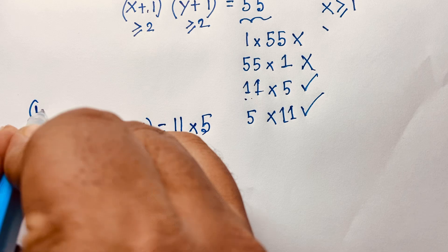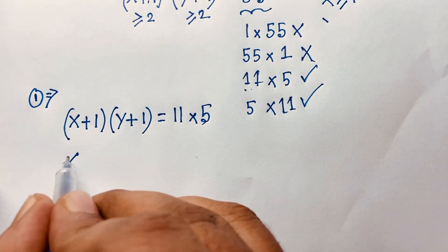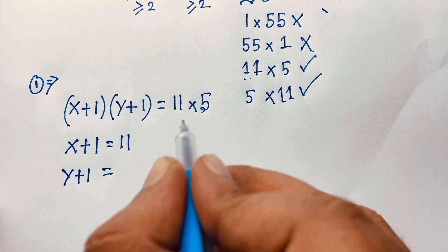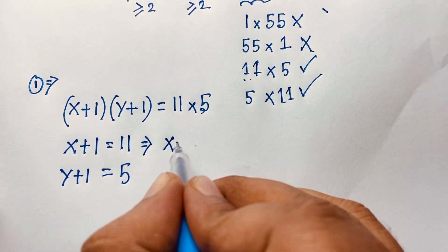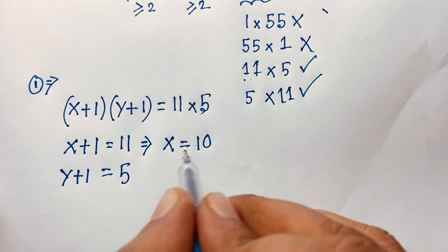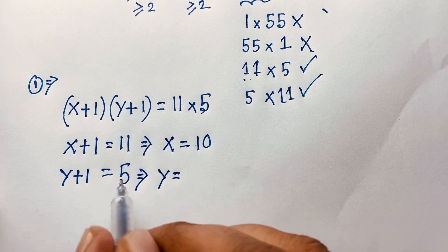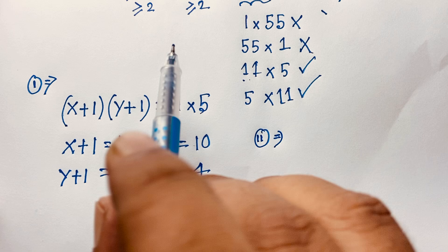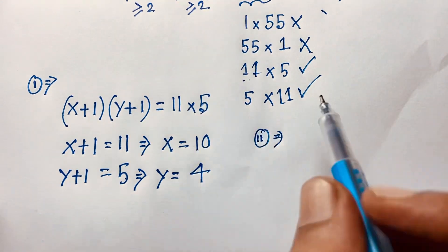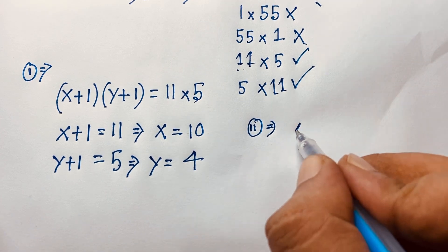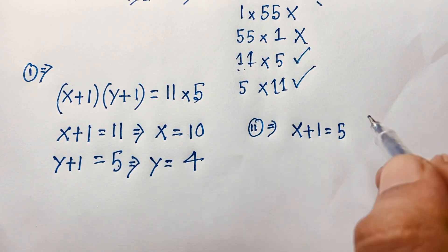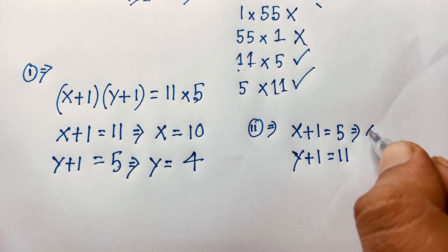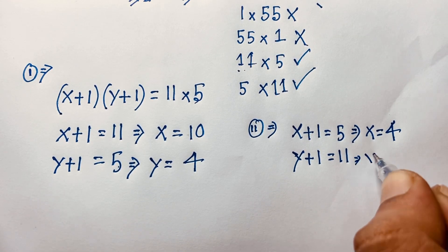First case: x plus 1 equals 11 and y plus 1 equals 5, giving x equals 10 and y equals 4. Second case: x plus 1 equals 5 and y plus 1 equals 11, giving x equals 4 and y equals 10.